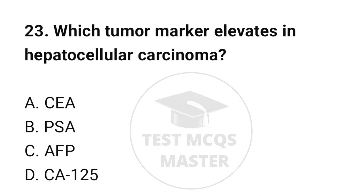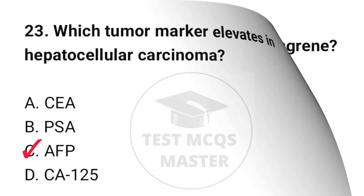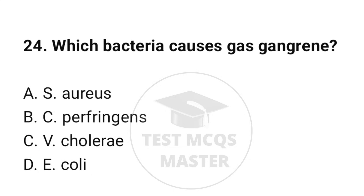Question number 23: Which tumor marker elevates in hepatocellular carcinoma? The correct option is C: AFP. Question number 24: Which bacteria causes gas gangrene? The correct option is B: C. perfringens.